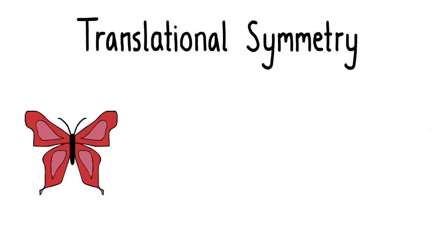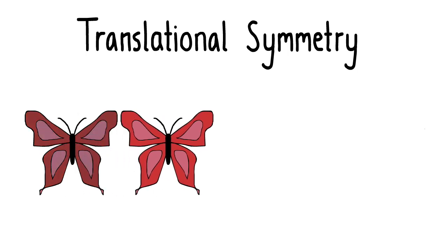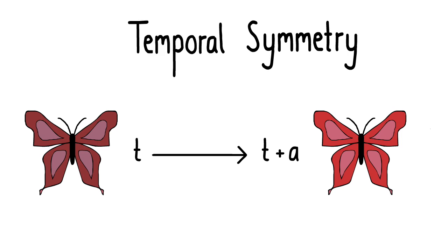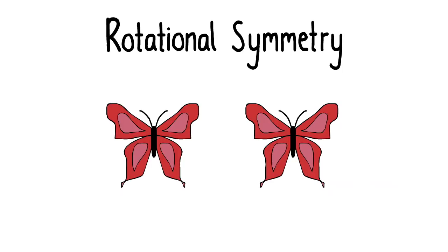But Noether's theorem deals with continuous symmetries, for example translational symmetry. The butterfly looks the same when shifted from one point in space to any other point of space. Similarly, temporal symmetry means the butterfly looks the same when shifted from one point in time to another.